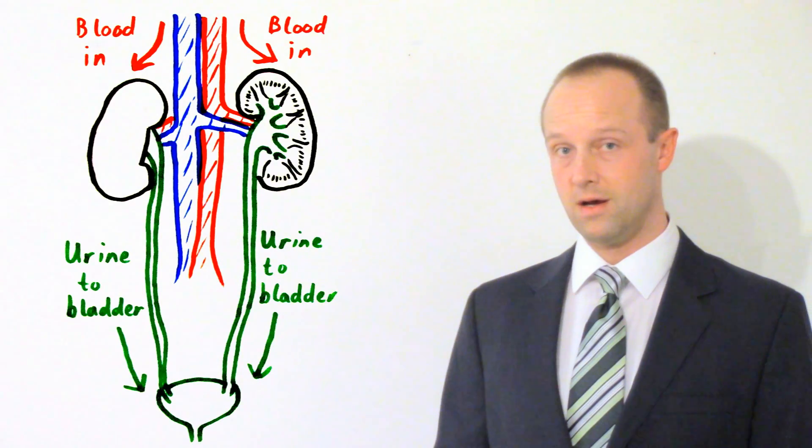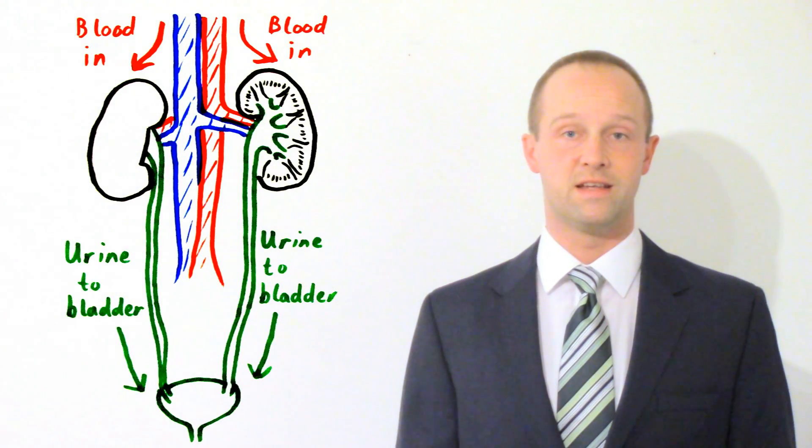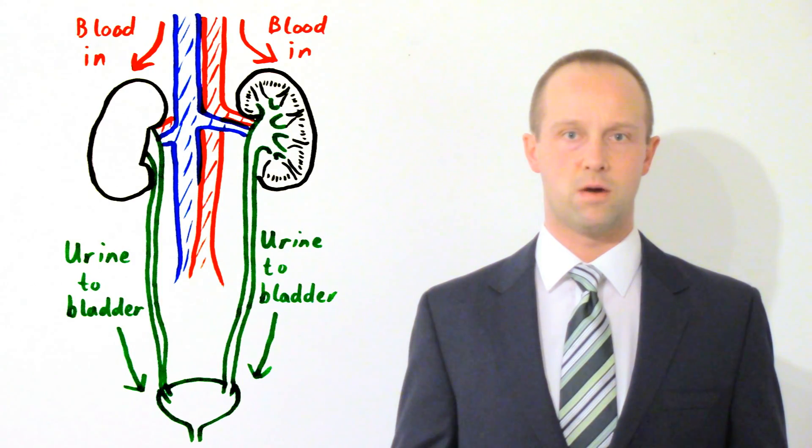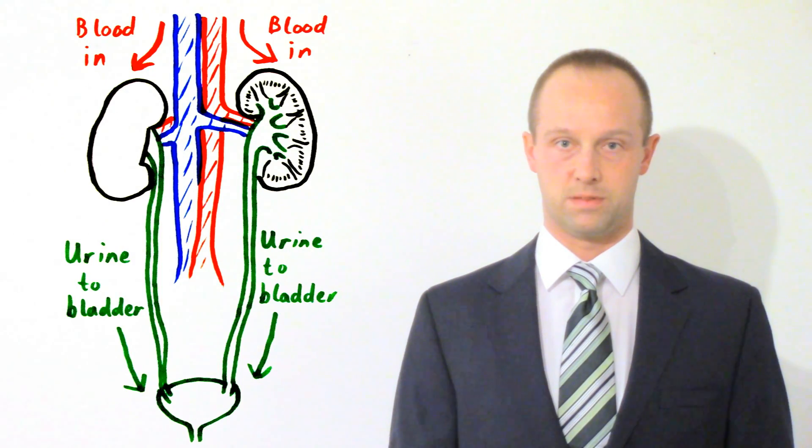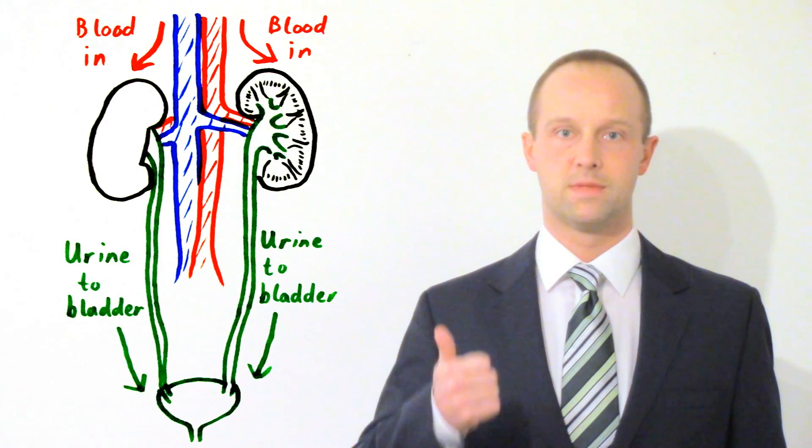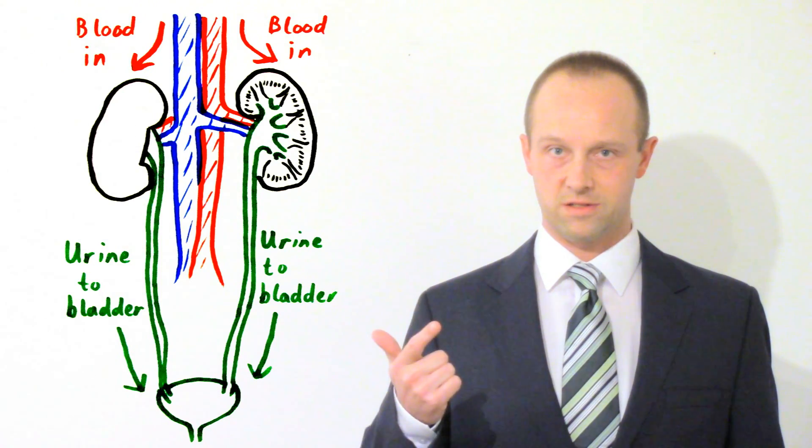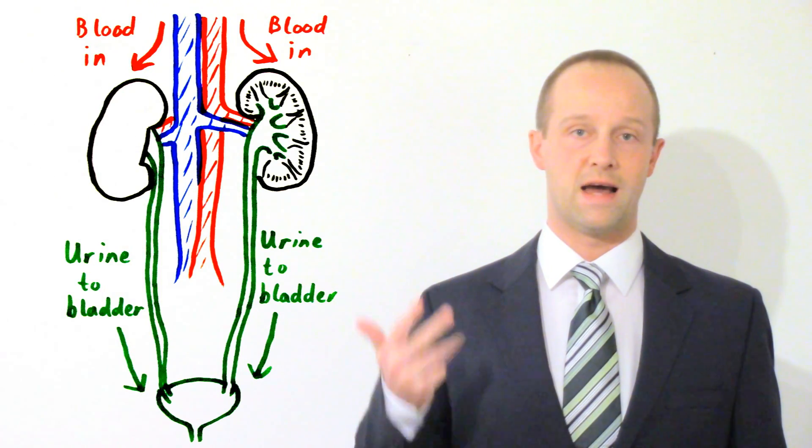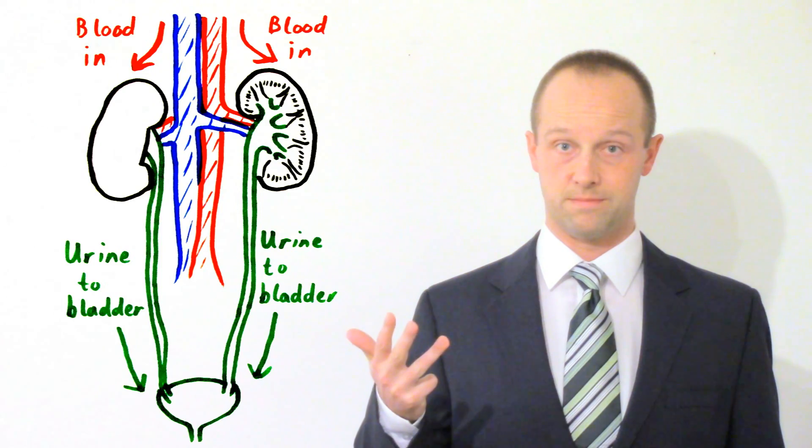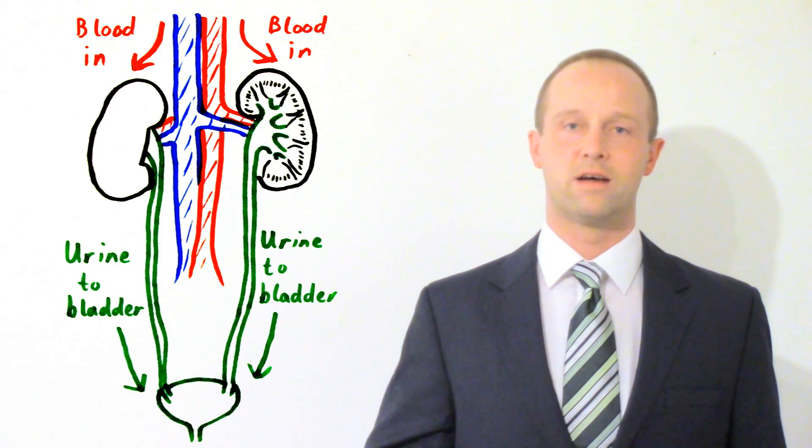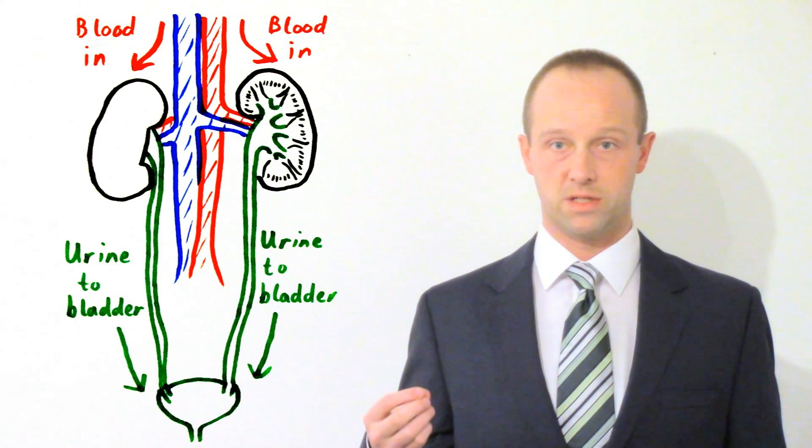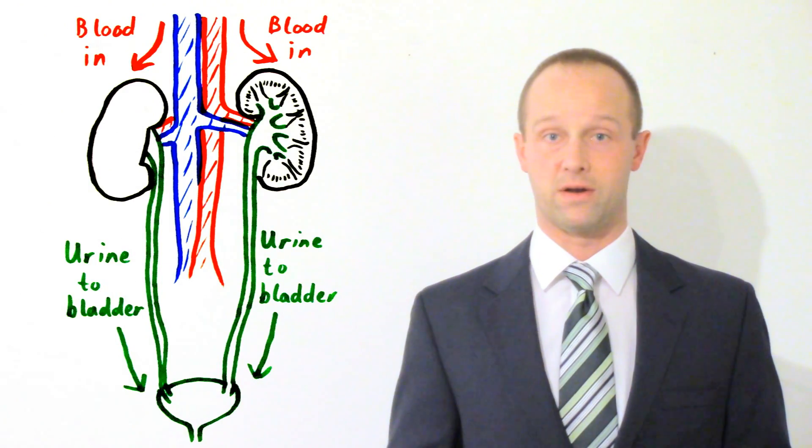Urea travels from the liver to the kidneys via the blood plasma. Once the blood plasma reaches the kidneys it gets filtered and various compounds are filtered out: water, dissolved ions or salts, glucose and the urea. Those four things are filtered out of the main bloodstream and that blood can then move back around the body.